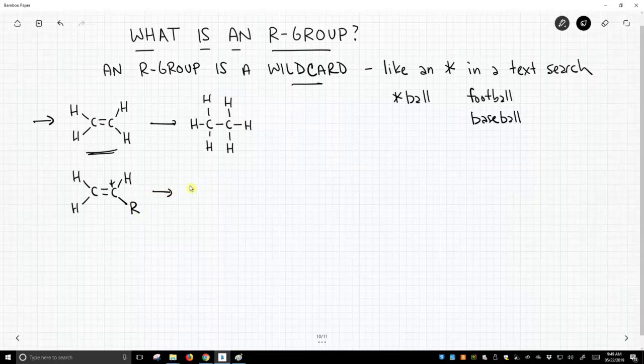So you can have all kinds of things there. It's just like putting an asterisk there. This reaction works with lots of different R-groups.